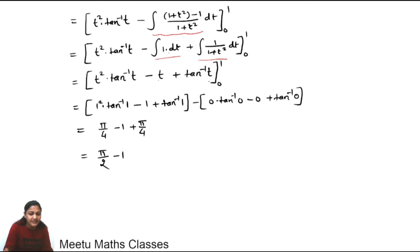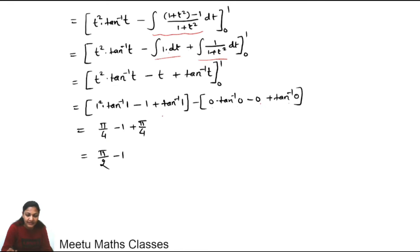Now our function is integrated and we substitute the limits. Put t = 1: 1²·tan⁻¹(1) − (1 − tan⁻¹(1)). Then put t = 0: all terms become 0. Since tan⁻¹(1) = π/4, we get π/4 + π/4 − 1, which simplifies to π/2 − 1.